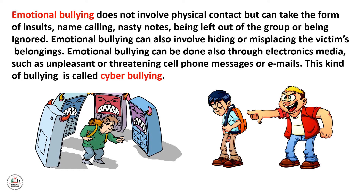Emotional bullying doesn't involve physical contact, but can take the form of insults, name-calling, nasty notes, being left out of the group, or being ignored. Emotional bullying can also involve hiding or misplacing the victim's belongings.